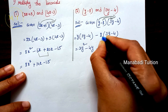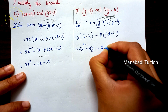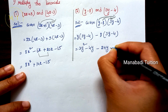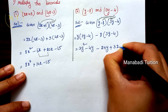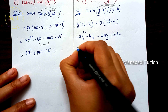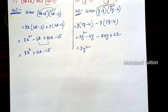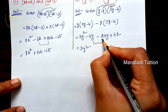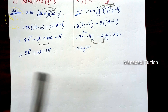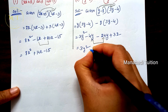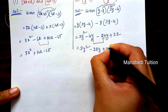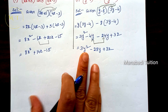y into 4 gives 4y. Next, minus 8 times 3y gives minus 24y, and minus 8 times minus 4 gives plus 32. So we have 3y squared. The two y-terms are both negative, so adding them gives minus 28y, plus 32. That's the answer.